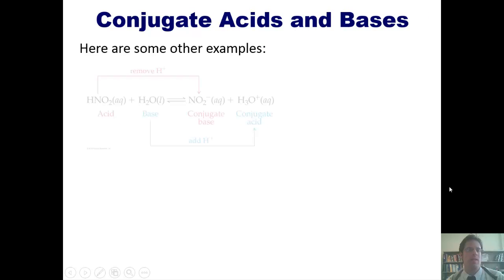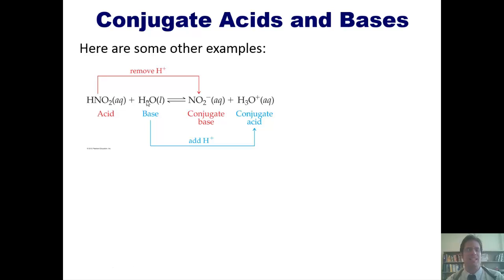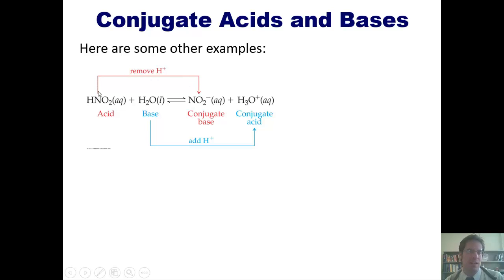Let's look at another example: nitrous acid reacting with water. We look at the left-hand side and identify the acid and the base. The acid gives up a hydrogen as it moves to the product side — that's the nitrous acid. Nitrous acid gives up a hydrogen and transfers it to water to become NO2 minus. The acid's conjugate base is NO2 minus. The water, after accepting the hydrogen, turns into hydronium H3O+, which is water's conjugate acid.